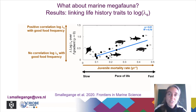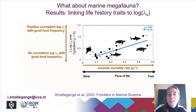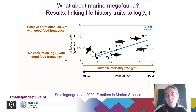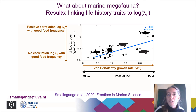Looking at the second environmental gradient — the good food frequency gradient — the y-axis shows values indicating a positive correlation between population growth rate and good food frequency, plotted against juvenile mortality rate. The faster life history species, the sea turtles and tiger shark, characterized by high juvenile mortality, are very sensitive to shifts in good food frequency, whereas the slower life history species, the giant manta rays and some reef sharks, are not sensitive to shifts in good food frequency. Plotting the same response variables against the von Bertalanffy growth rate emphasizes the same result.